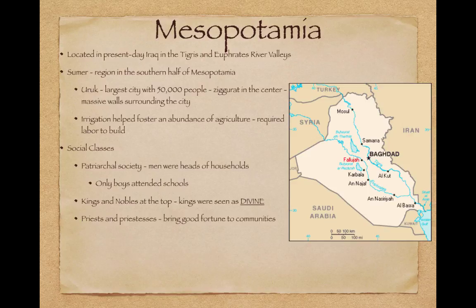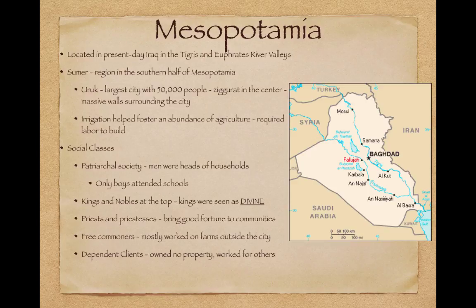This theme — rulers being seen as divine or as god himself — recurs across these early civilizations. Priests and priestesses would bring good fortune to communities. Free commoners mostly worked on farms outside the city walls. There were dependent clients who owned no property and worked for others. At the bottom of the social class pyramid were slaves — those in debt, prisoners of war, and criminals — who often worked as domestic servants.